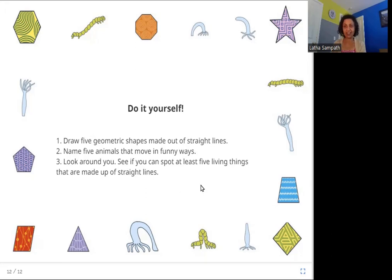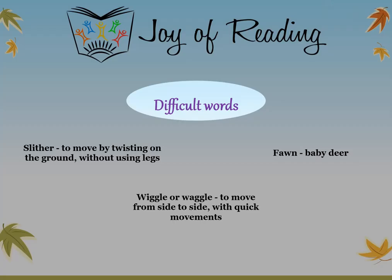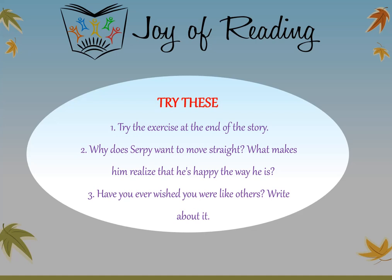I hope you enjoyed the story. The difficult words in this story are: slither — to move by twisting on the ground without using legs; fawn — baby deer; wiggle or waggle — to move from side to side with quick movements. Try these questions: Why does Serpy want to move straight? What makes him realize he is happy the way he is? Have you ever wished you were like others? Write about it.